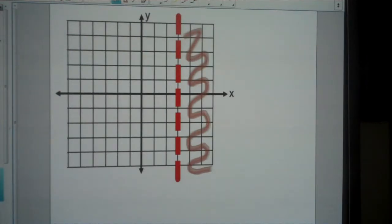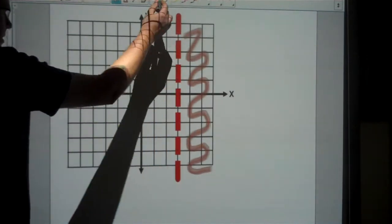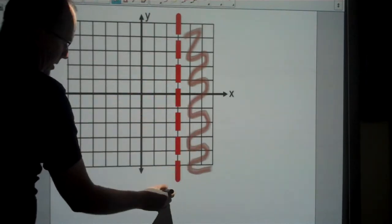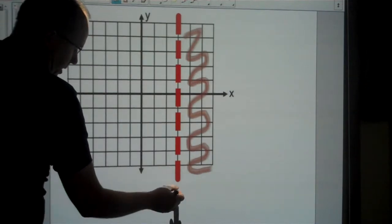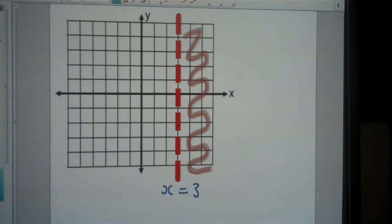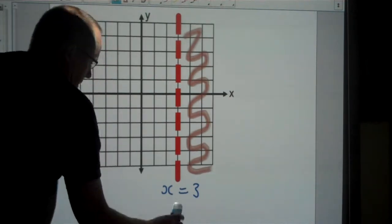Looking at a few examples, first we'll figure out the equation of this line. This is a vertical line going through 3 on the x-axis. All vertical lines start with x equals, so this one is x equals 3. Actually, we're not going to put equals for this one because this is an inequality.